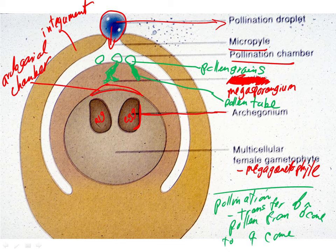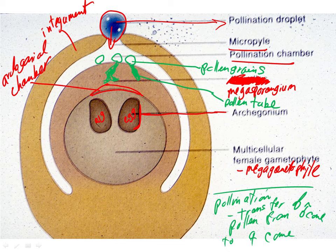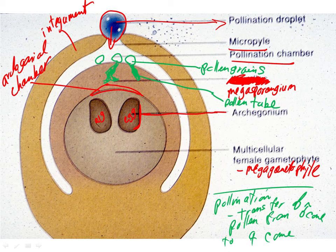As the cone matures, the megasporophylls and microsporophylls separate from each other slightly, allowing the entrance of beetles into the cones. On the male side, the beetles come in, crawl around, eat pollen, and eat the cones a little bit.